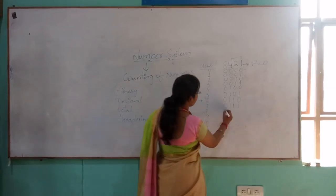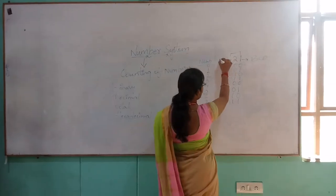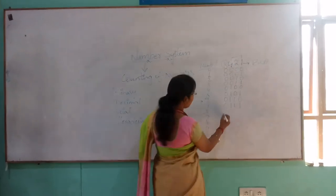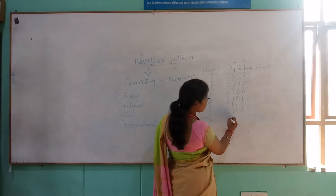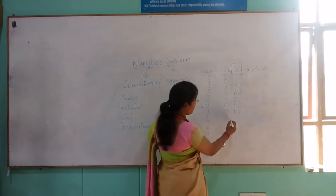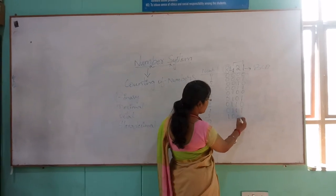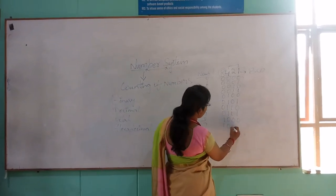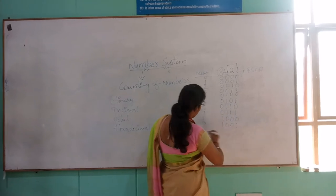For 8, we should check the number 8 and keep 1, 0, 0, 0. For 9: 1, 0, 0, 1.